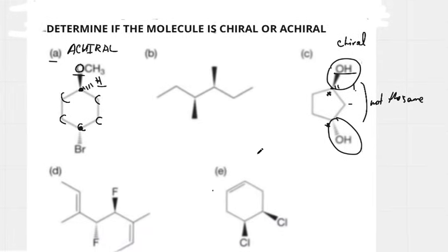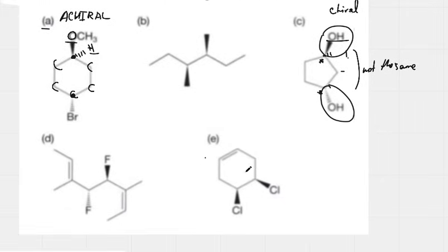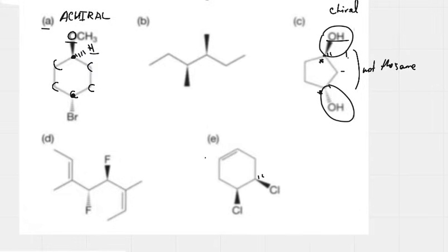Moving to molecule E, we first ask: is there a stereogenic center? This carbon is connected to chlorine, hydrogen, and two carbons — but they're different because one carbon is next to a chlorine and the other is not. So that carbon is stereogenic. The carbon next to it, also bearing a chlorine group, is stereogenic as well.